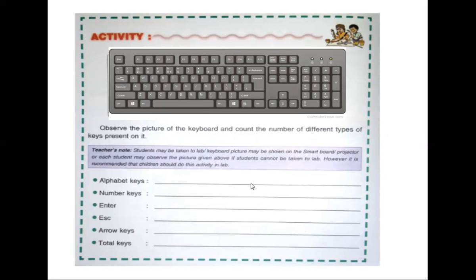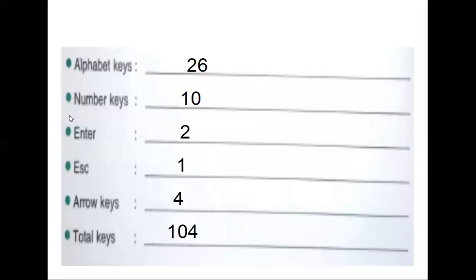Activity: Observe this picture of the keyboard and count the number of different types of keys present on it. Then: alphabet keys — total number is 26.